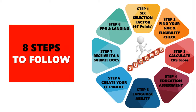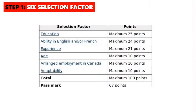The first stage is to calculate your 67 points. If your score is not at least 67, you have to improve your score first before proceeding to the next step. If you are struggling to boost your score, let us know in the comment section — we may be able to suggest something fruitful. You can evaluate your score from the link mentioned in the description.